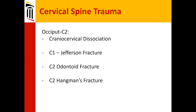As far as different types of fractures we deal with, the cervical spine has very peculiar types that can happen and different ways of dealing with them. Occipital-C2 cranial-cervical dissociation — we can literally have an internal decapitation. C1 Jefferson type fracture is a fracture of the ring itself.